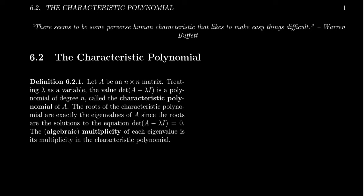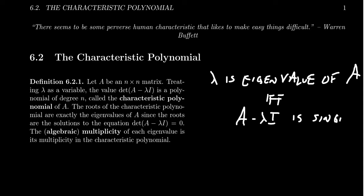We saw previously that a number lambda is an eigenvalue of the matrix A. This happens if and only if the matrix A minus lambda I is singular, it doesn't have an inverse. The matrix A minus lambda I, where I is the identity matrix, will be singular if and only if the determinant of A minus lambda I equals zero.